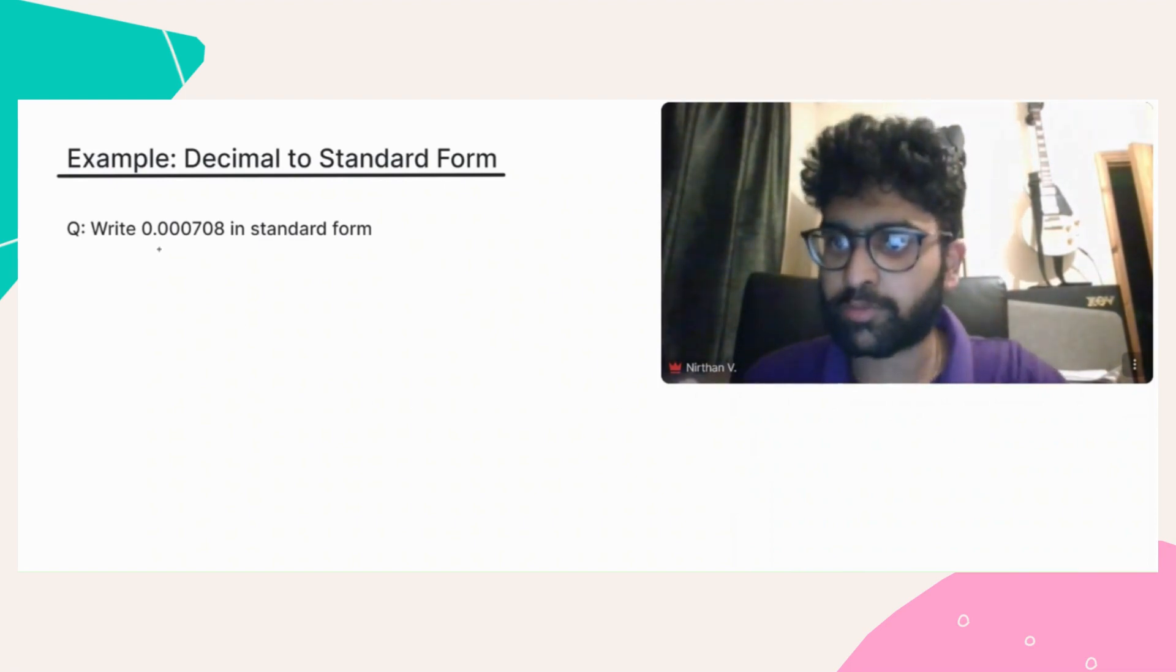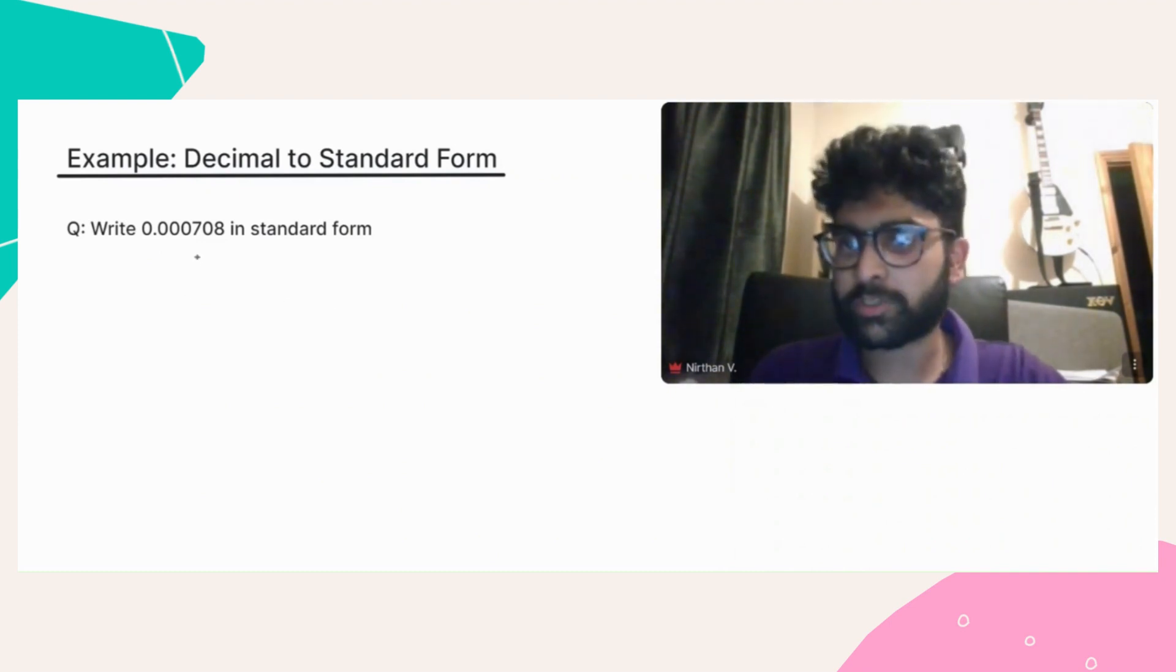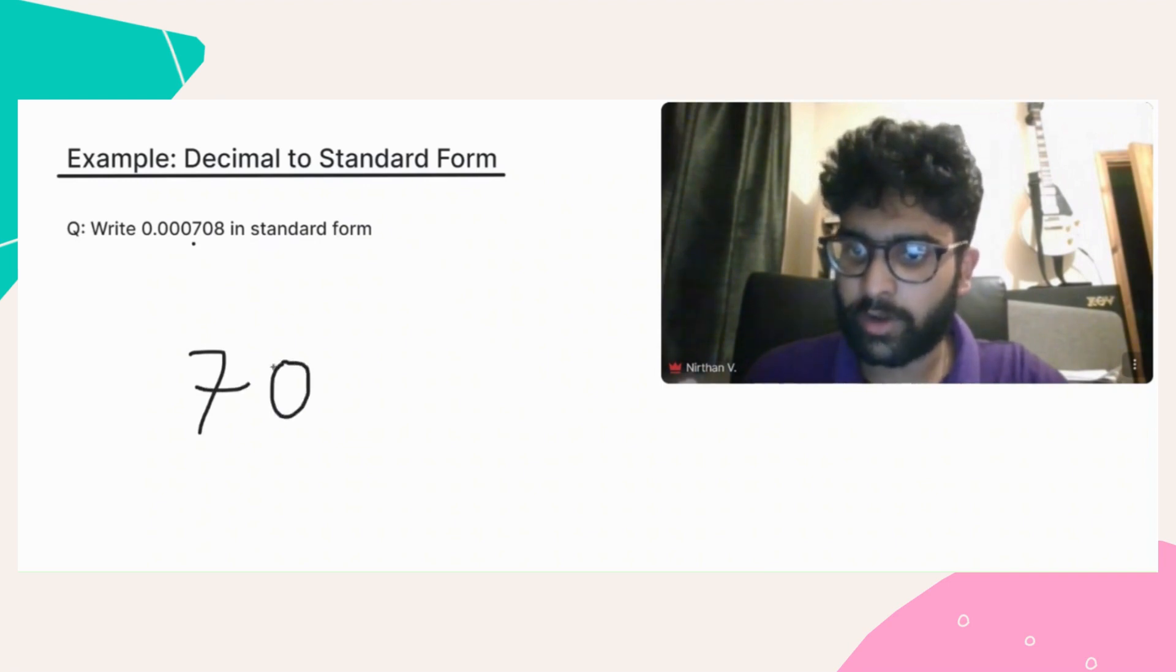So here we have to write 0.000708 in standard form. So the first thing to do is to identify the first non-zero digit, which is the 7 in this case. Then we want to write that and all digits after it down below. So in this case, 708.